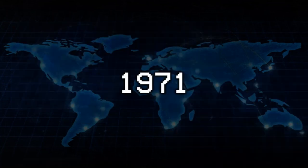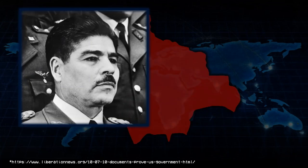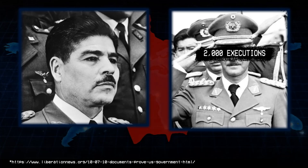1971. Bolivia. After half a decade of CIA-inspired political turmoil, a CIA-backed military coup overthrows leftist president Juan Torres. In the next two years, dictator Hugo Banzer has over 2,000 political opponents arrested without trial, then tortured and executed.